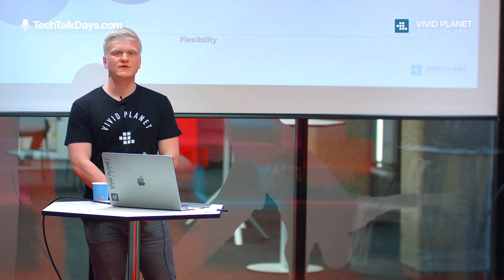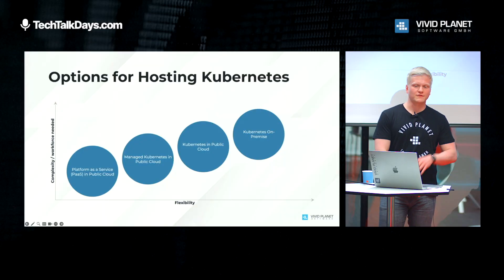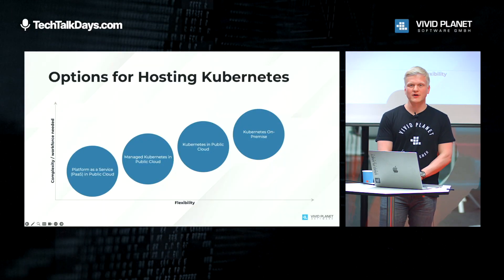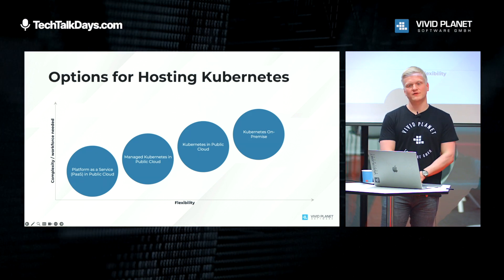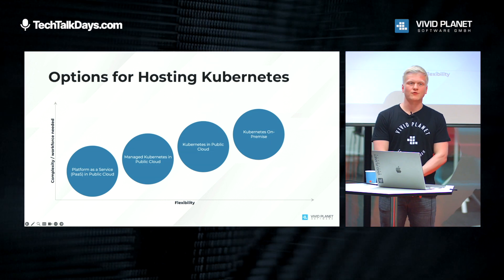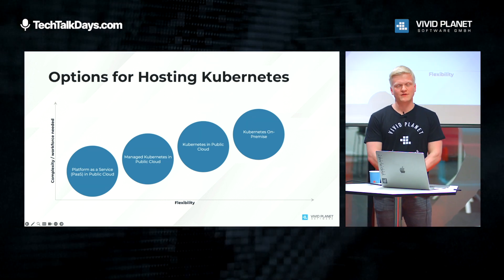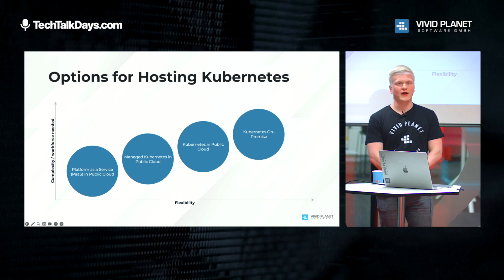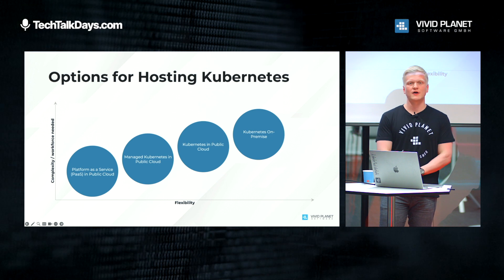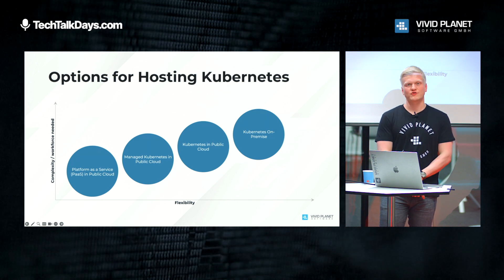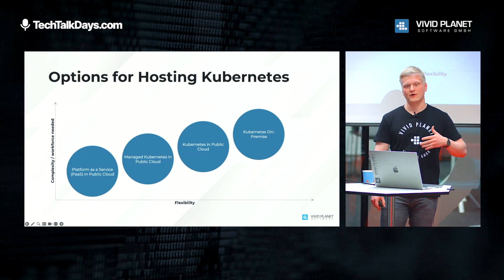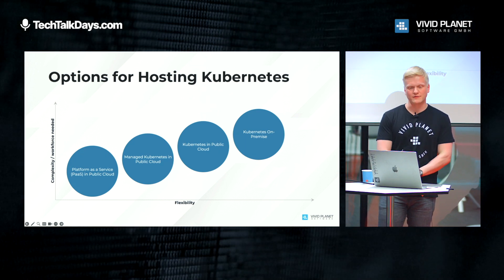If you don't have the required workforce to handle that complexity, you can trade a bit of that complexity for less flexibility by going into the public cloud. You can start by using Kubernetes in the public cloud, meaning you're still deploying Kubernetes on your own but renting the hardware from a public cloud provider. This gives you the flexibility that you don't need to buy or manage the hardware, and you still have full control over Kubernetes.